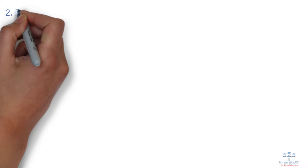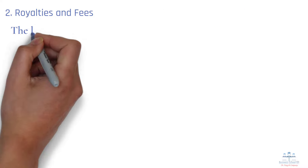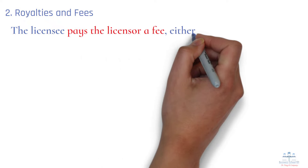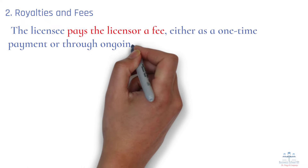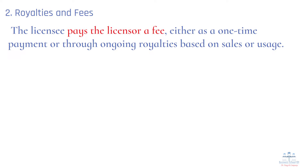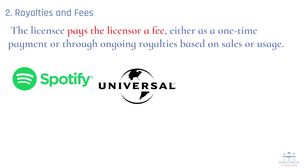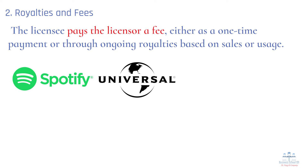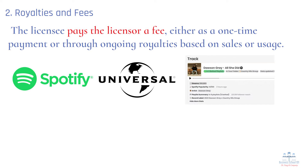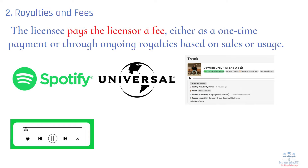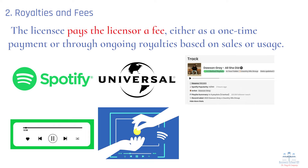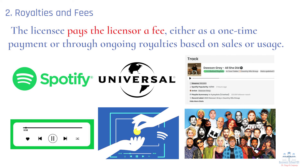Number 2: Royalties and fees. The licensee pays the licensor a fee either as a one-time payment or through ongoing royalties based on sales or usage. For example, Spotify licenses music from record labels like Universal Music Group, paying royalties to artists and labels based on streaming counts. Each time a song is played, the licensee, Spotify, pays a small royalty to the licensor, the record label and artists, creating ongoing revenue from the use of their intellectual property.